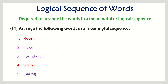Next question: room, floor, foundation, walls, and ceiling — parts of a building, in the sequence of construction. First we start with the foundation, without which there is no building. Then we construct the walls, then the ceiling, then the floor, and finally the room is complete.